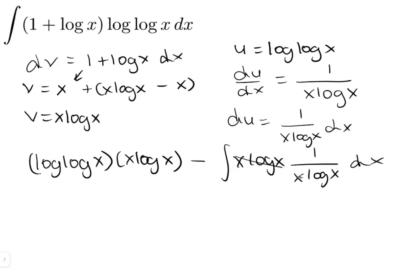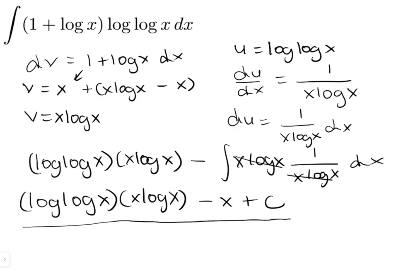And these just cancel out. So we're left with the log of the log of x times x log x, and the integral of 1 dx is just x, so we get minus x plus some constant c, and there we have our final solution.